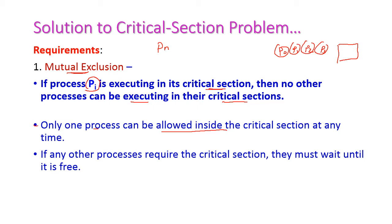If any other process requires the critical section, they must wait until it is free. That is, if P1, P2, and P3 want to execute, these three processes should wait until P0 completes its execution. So only one process is allowed to enter the critical section at a time — this is mutual exclusion.